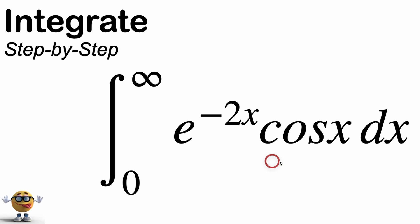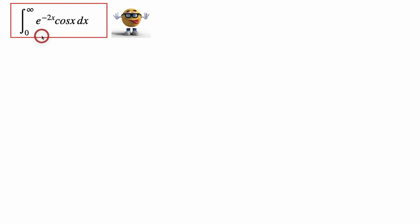Yo, we're going to integrate e to the negative 2x cos x from 0 to infinity, and it's going to be awesome because this is the shortcut method, faster version of doing this.